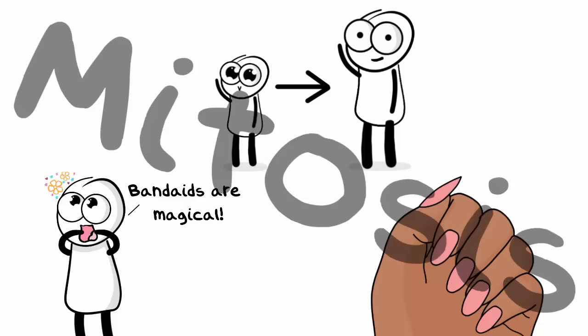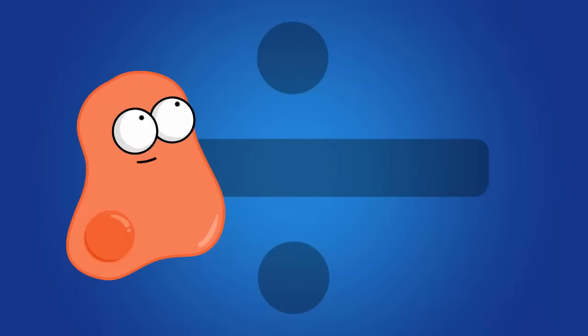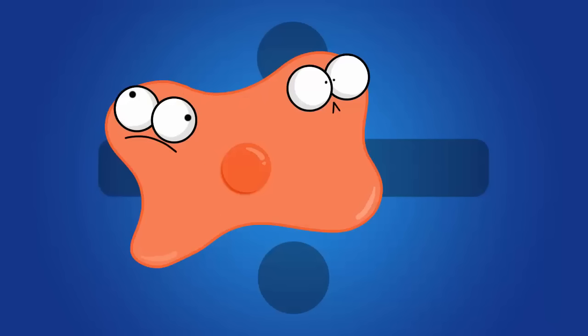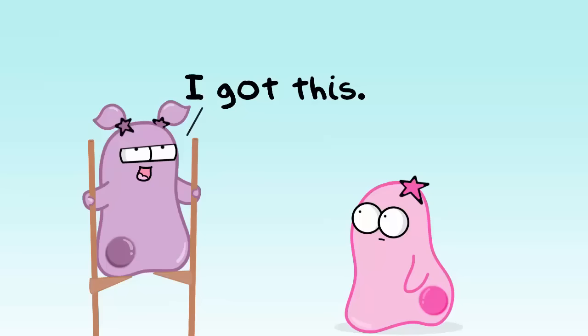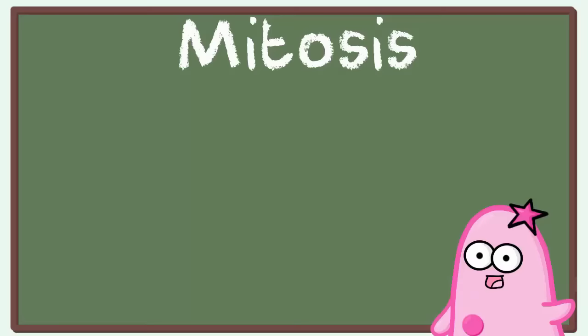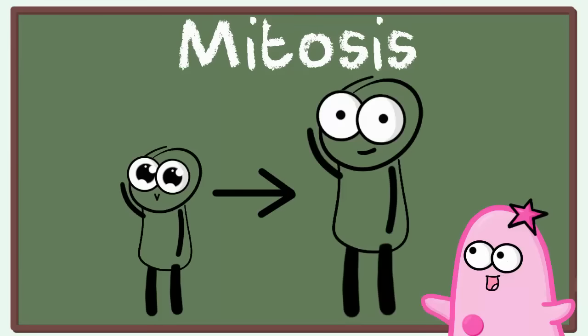One major thing they have in common is mitosis. Mitosis is a type of cell division done by most of your body cells and it's really important for cells to divide. If they didn't divide you wouldn't grow. How do you grow if you can't make more cells, right? So one reason why you're bigger than you were when you were five is mitosis.